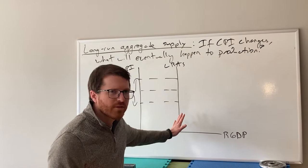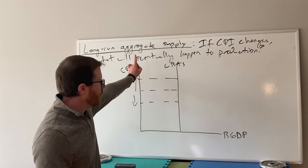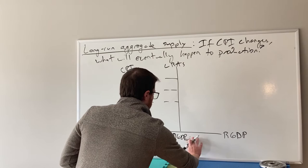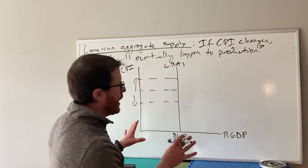So changes in CPI, whether going up or down, have no impact on the long-run economy. What this graph is telling us is not what is happening now — it's telling us what will eventually happen. It's saying that if CPI goes up, production is eventually not impacted whatsoever. So it remains the same — that would be the long-run real GDP. Next, we're going to put these things together.